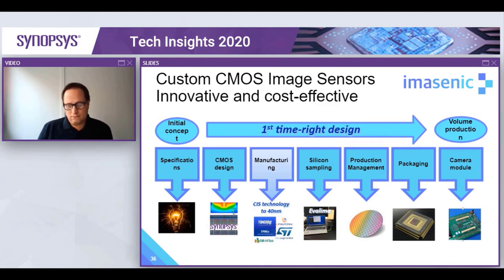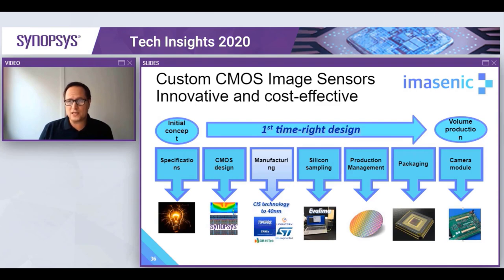We almost always do silicon sampling — electro-optical characterization of the sensors we design. Also very often we do production management for our customers, interfacing with the foundries. We can also do packaging and camera modules, but very often our customers are camera manufacturers so they do this themselves.